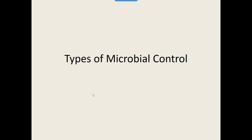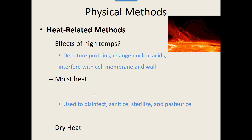With types of microbial control, there are really two groups: physical methods and chemical methods to kill or control microbes. We'll start by talking about physical methods, and one physical method is using heat.